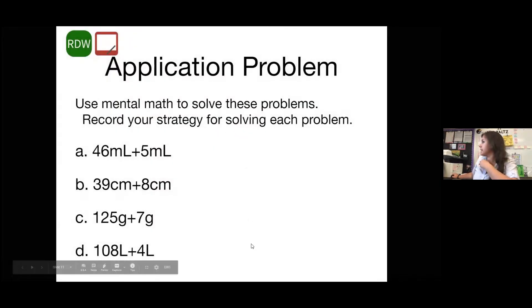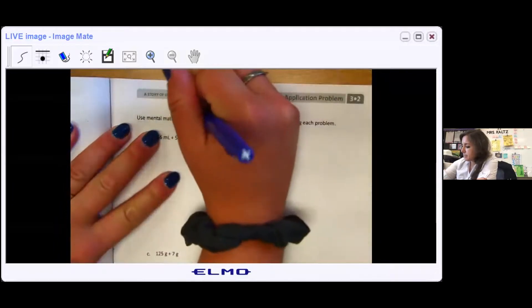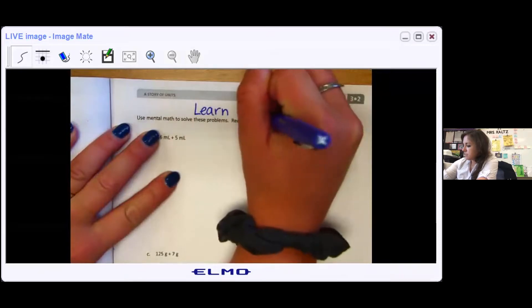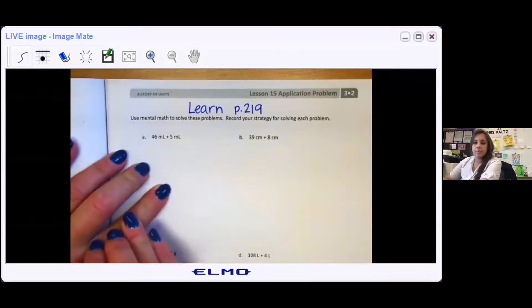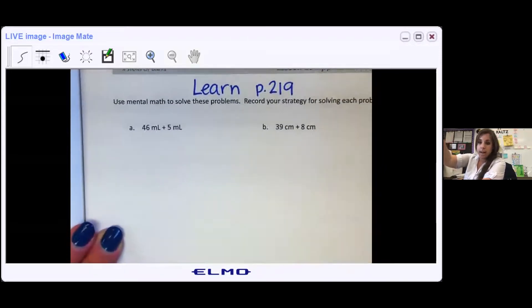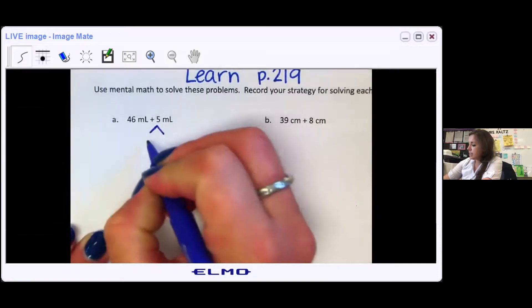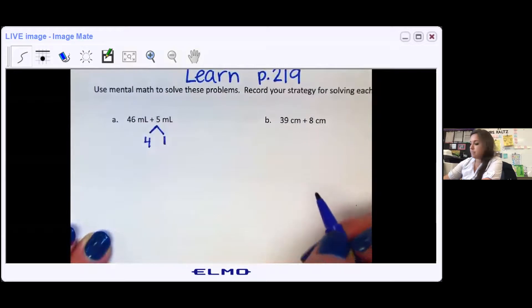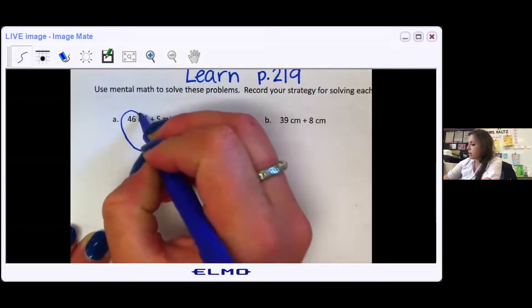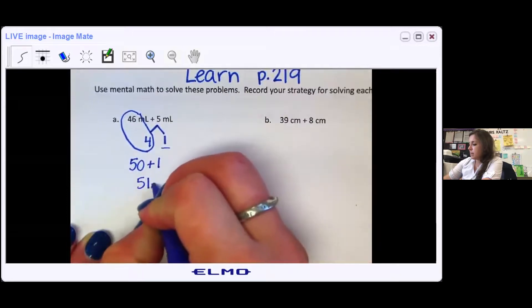Okay, we're going to be doing some mental math for our application problem. So go ahead, open up your learn book to page 219. So it's asking us to use mental math to solve these problems. Now, I'm going to let you solve them however you want. But I do want you to record how you got there. So I'm going to do an example for you for part A. I'm going to split up 5 into 4 and 1 milliliter. That way I can loop the 46 and the 4 to easily make 50 plus my leftover 1 to equal 51 milliliters.